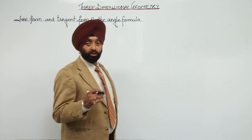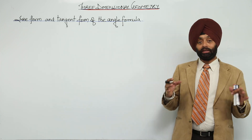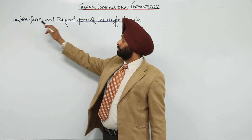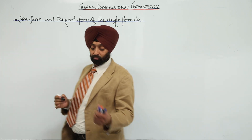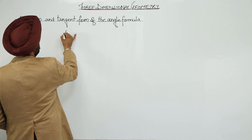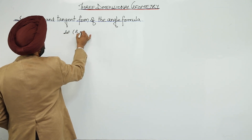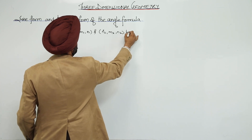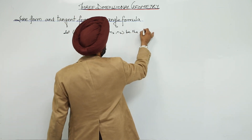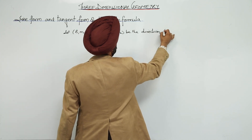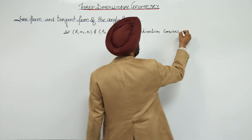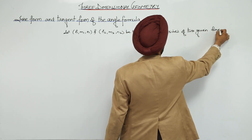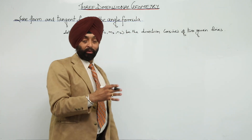We have gone through the angle between two lines and the formula was in terms of cos theta. Now we are just writing the formula in terms of sin theta and tangent theta — the sin form or tangent form. Let L1, M1, N1 and L2, M2, N2 be the direction cosines of two given lines. Remember, these are the direction cosines; don't mix them up with the direction ratios.